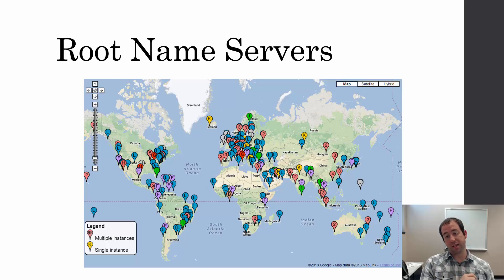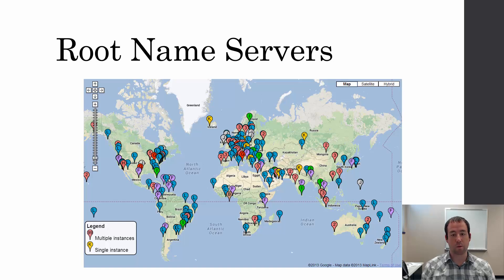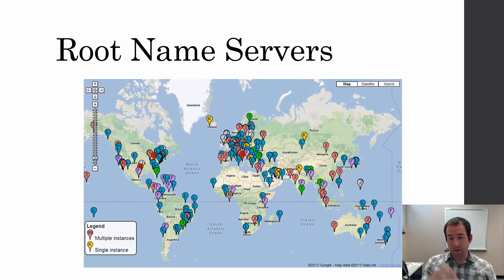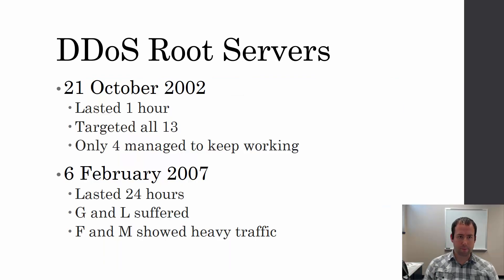Even though all of those servers across the world have the same name, you'll get directed to the closest one to get DNS requests as quickly as possible, because information takes time to travel all across the world. If the only DNS servers for l.root-servers.net were in Kansas and you were in the middle of Russia, you would have to wait for the data to get to Kansas and back.